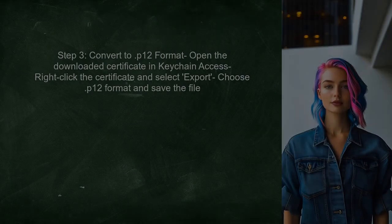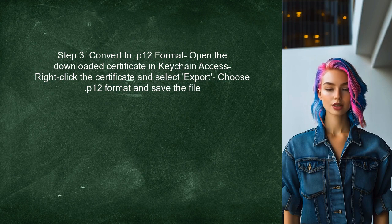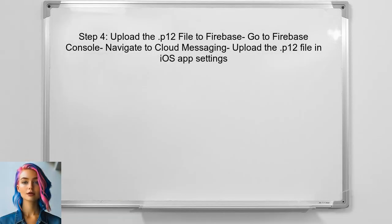After downloading the certificate, convert it to a .p12 file format. This can be done by double-clicking the certificate to open it in Keychain Access, then exporting it as a .p12 file. Then upload the .p12 file to the Firebase console by navigating to the Cloud Messaging section and uploading the certificate under the iOS app settings.